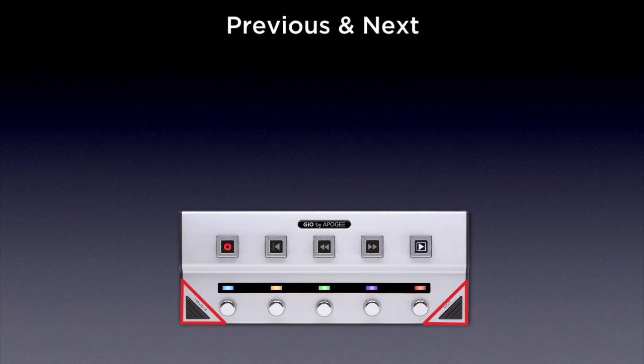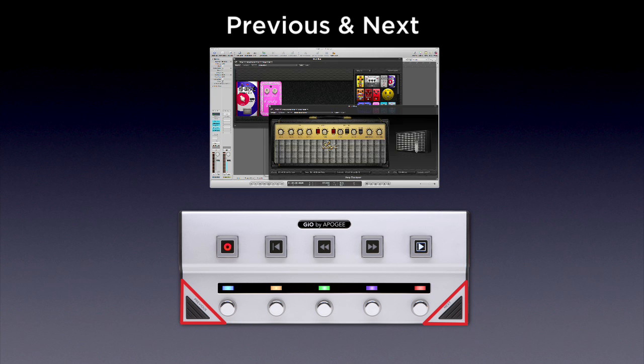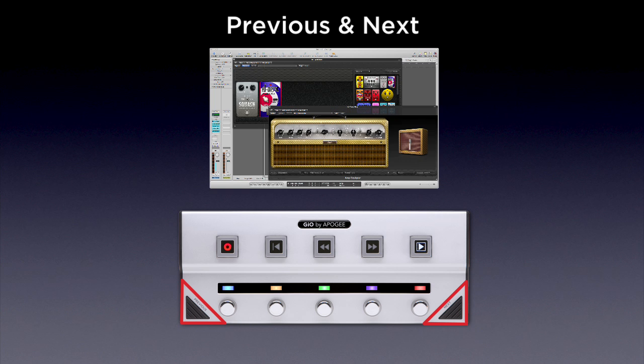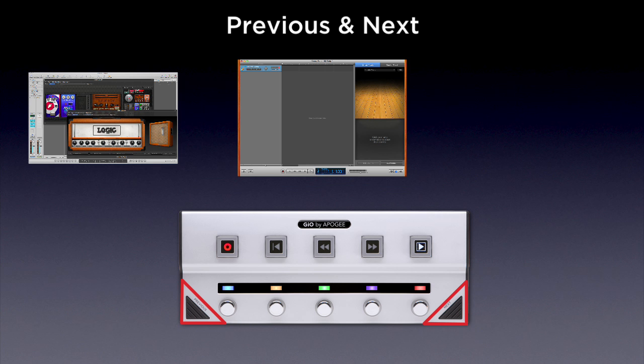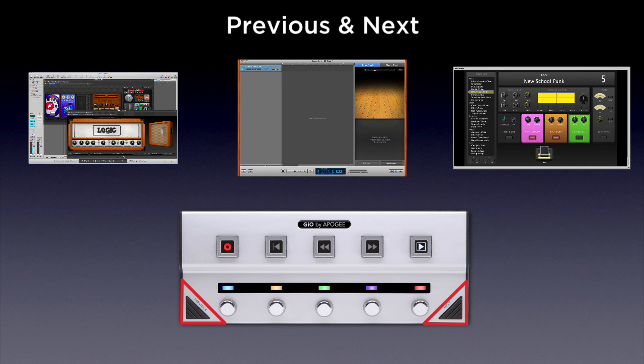The previous and next buttons let you quickly audition and toggle between the guitar amps and effects presets in Logic, GarageBand and the patches in Main Stage.